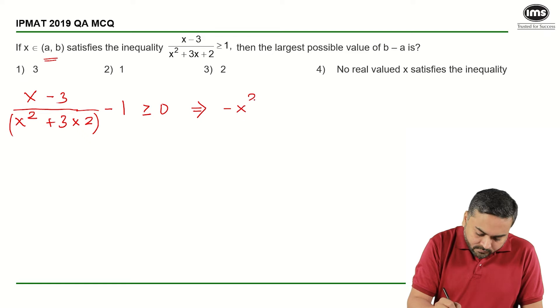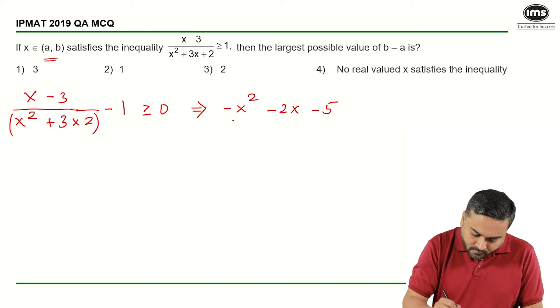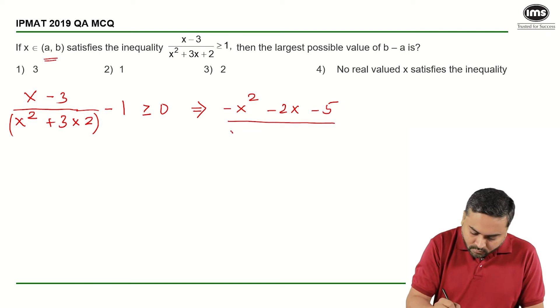I will get -x², then -3x plus x gives me -2x, and then I will have -5 upon x² + 3x + 2 ≥ 0.